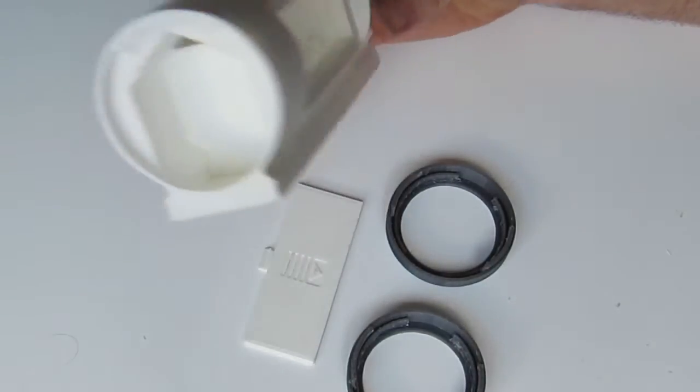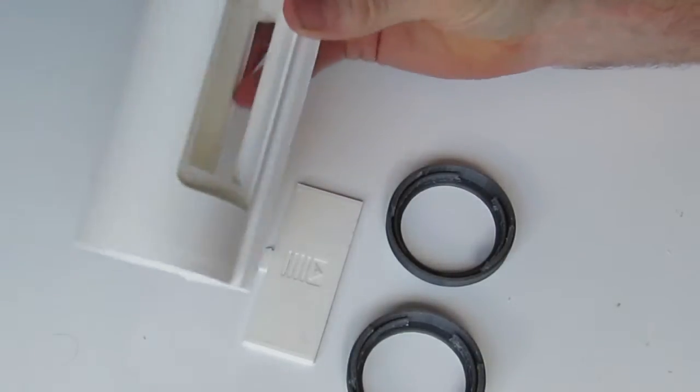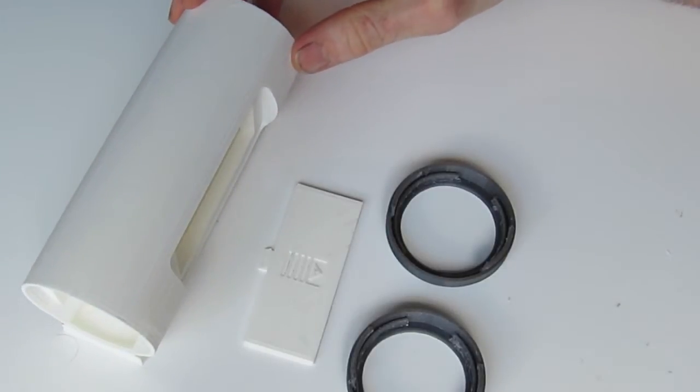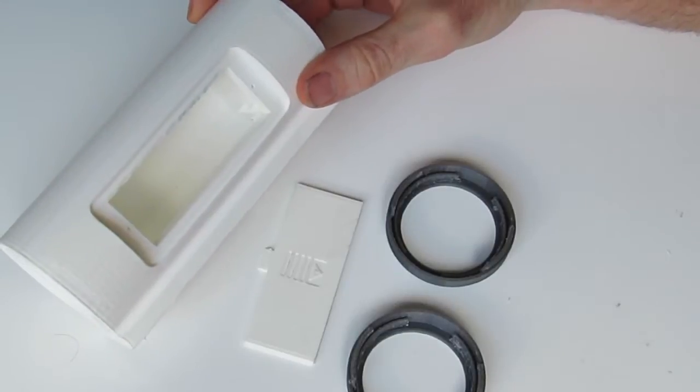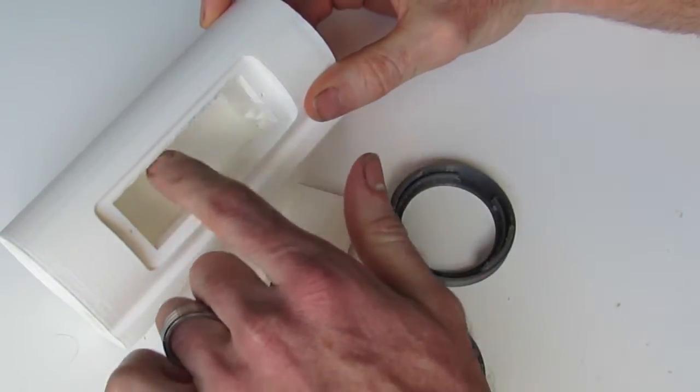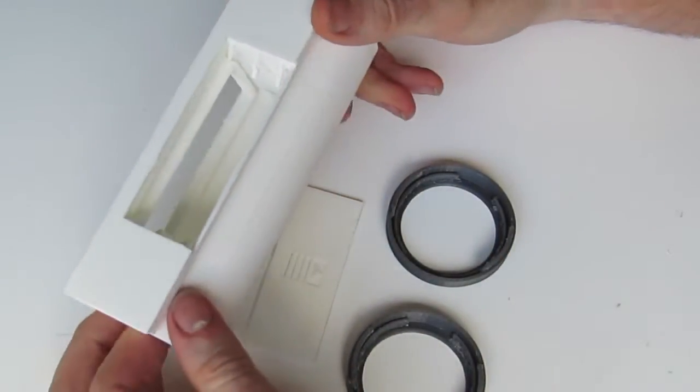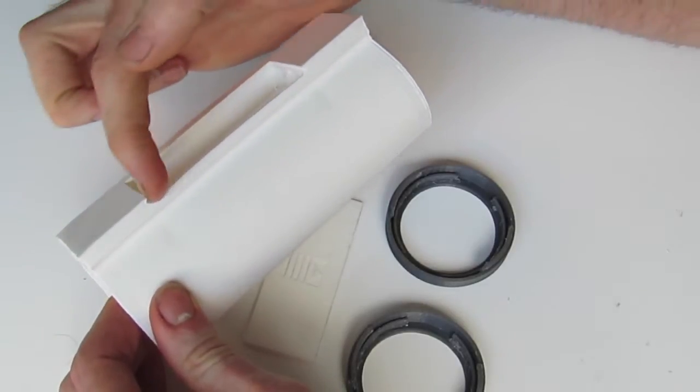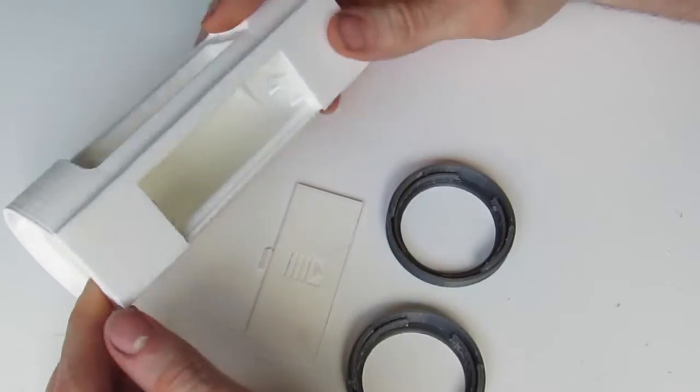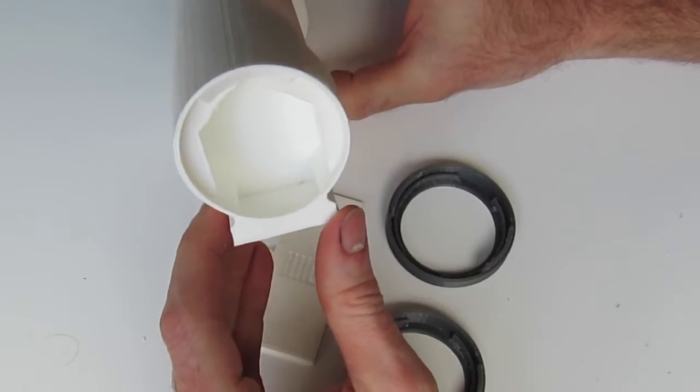So first of all, we've got our main component case here. A very straightforward print. Don't print it with any support material. The actual STL file has support material built into it. One area will be here where the actual module goes in. And secondly, there'll be a tiny little bit of support material along this edge here where our sliding cover to cover up the battery slides in as well. Besides that, you don't want to print with any support material inside. It's designed that way.